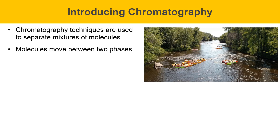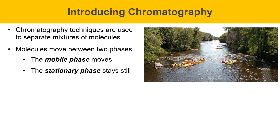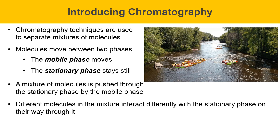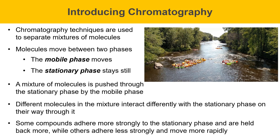The molecules move between two phases. One is called the mobile phase, which moves — analogous to the water. The other is the stationary phase, which stays still — analogous to the rocks in the river. A mixture of molecules is pushed through the stationary phase by the mobile phase, and different molecules interact differently with the stationary phase. Some compounds adhere more strongly and are held back more, while others adhere less strongly and move more rapidly. So molecules have different mobilities through the stationary phase.